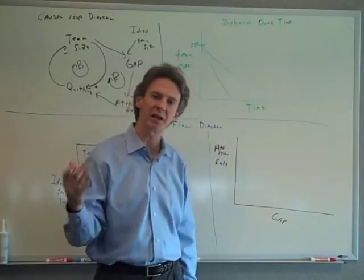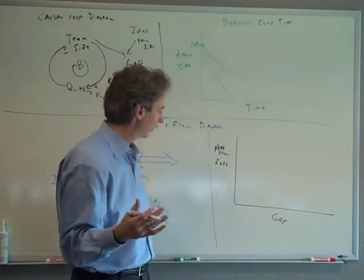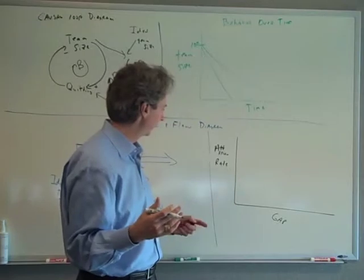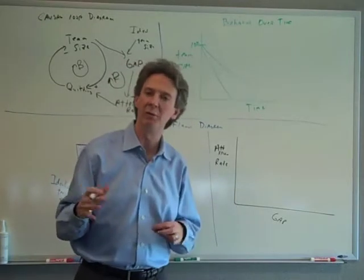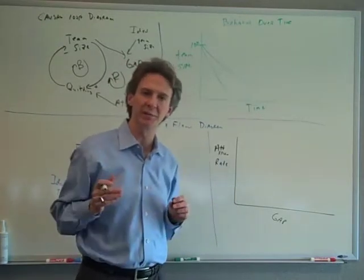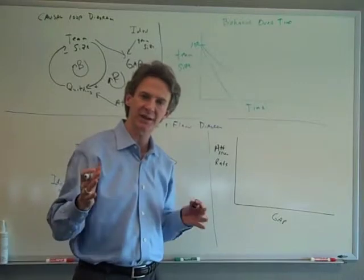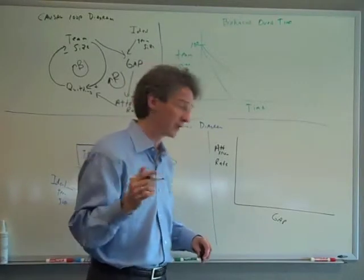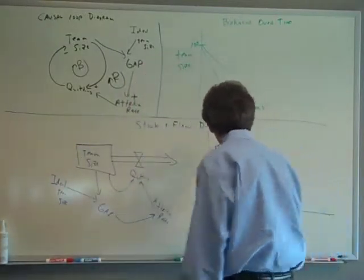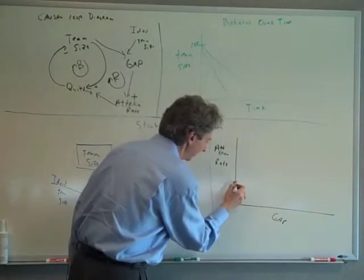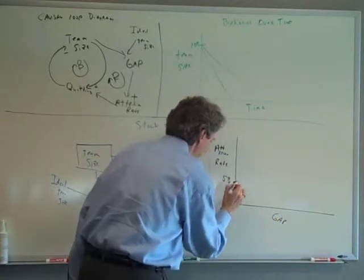The way I usually do this is I pick a couple points. The point would be let's say there's no gap. What would be the attrition rate if the team was completely filled up? So let's say we'll do five percent for that, which is a pretty low attrition rate. So right here when the gap is zero, the attrition rate is five percent.